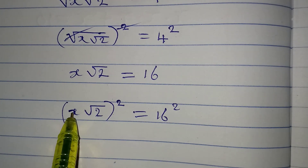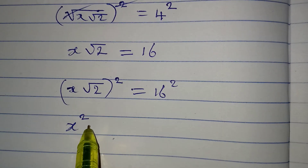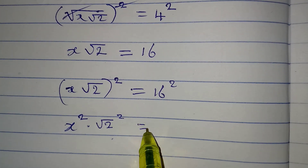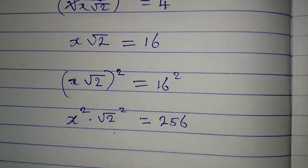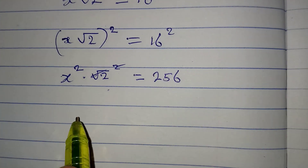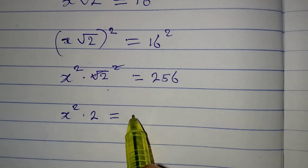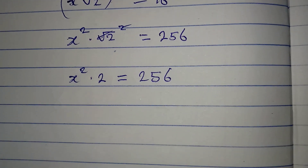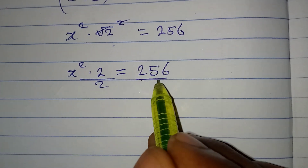This is the same thing as x squared multiplied by root 2, all squared, and equal to 16 squared, which is 256. This and this can now cancel so that x squared multiplied by 2 will be equal to 256.